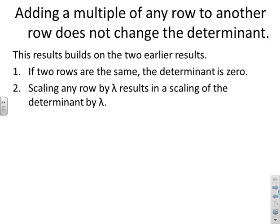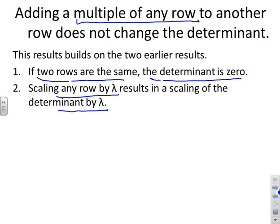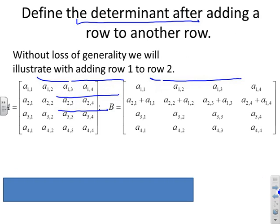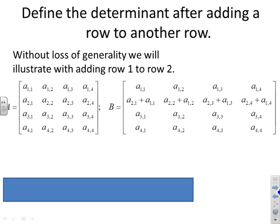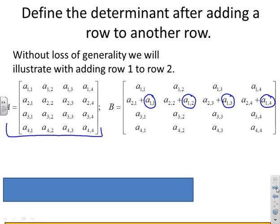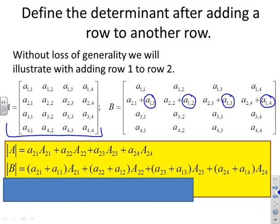Adding a multiple of any row to another row does not change the determinant — this is an important rule. It builds on two earlier results: identical rows give determinant zero, and scaling a row by lambda scales the determinant by lambda. As ever, the same applies to columns. Here is an example: matrix B is obtained from matrix A by adding row one to row two; all other rows are unchanged.